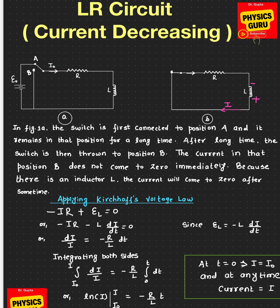Initially, this was the current direction — the current was going this way. But the moment we connect to switch B, the current starts decreasing. In reaction to that, the inductor will produce an EMF that resists the change, so the induced current will be in the same direction as the original current. In order for the induced current to be in the same direction, this terminal must be positive and this terminal must be negative.